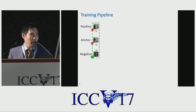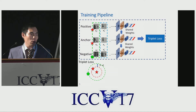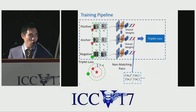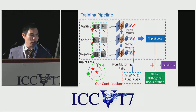The triplet contains an anchor, a positive, and a negative. These are passed through a three-branch network to calculate the triplet loss. After that, we sample non-matching pairs from the dataset to calculate our global orthogonal regularization. Finally, we simply add the triplet loss and our regularization together to get the final loss.